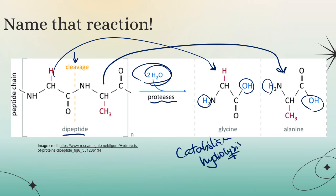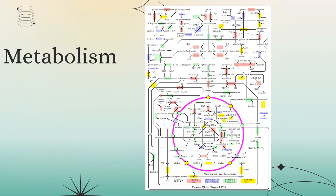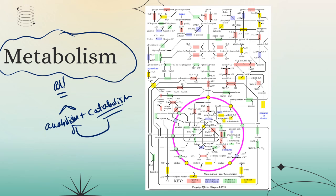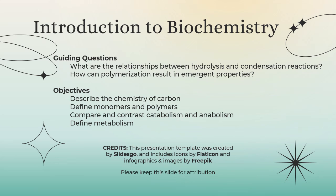Metabolism is the sum of all enzyme-catalyzed reactions in a system — which means it is the sum of anabolism and catabolism. We eat food, break it down (catabolism), then use those pieces to build up our own bodies (anabolism). Catabolism and anabolism together are metabolism, and it's super complex — here's a small map of just one small thing that happens in the liver.